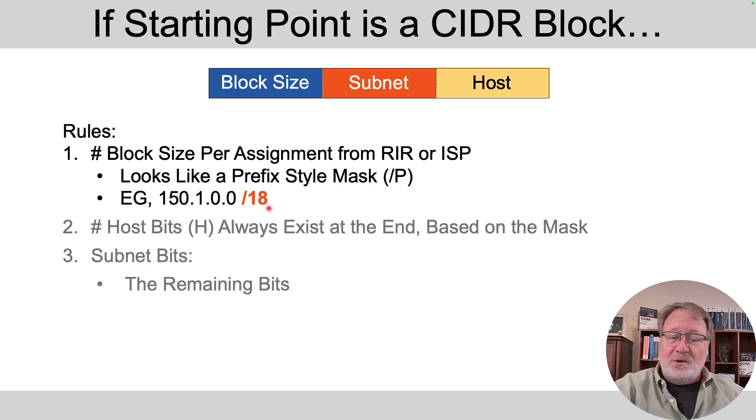They're also going to give you what looks like a prefix length, like a slash 18 in this example. And if you do subnetting math on these numbers, you'd get a range of addresses, and that defines your block, the addresses you've got to manipulate and subdivide and subnet to use as subnets and addresses in your network.